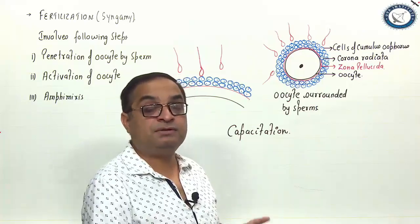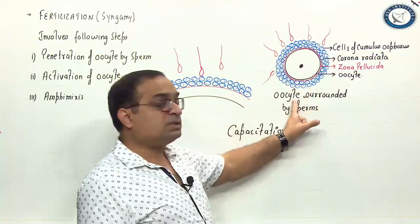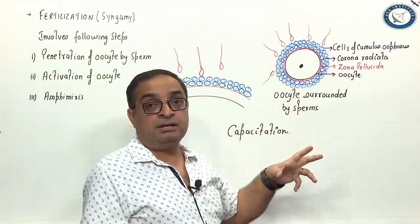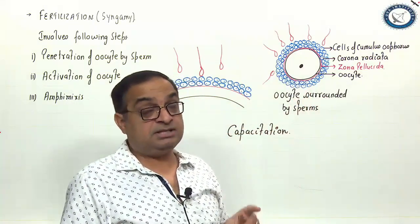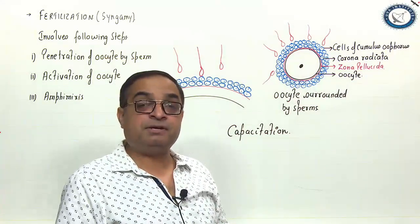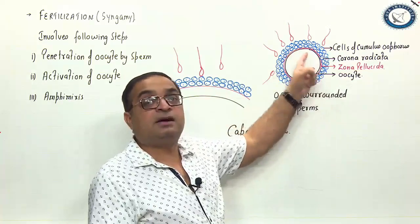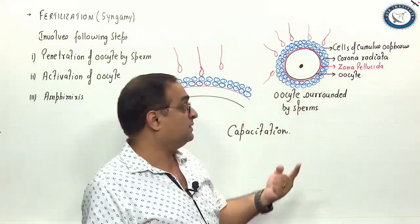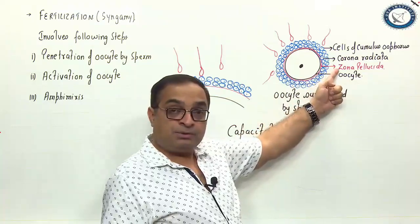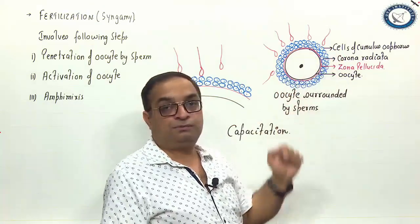As in this diagram, I have shown that the oocyte which is released from the ovary, please remember it is not ovum, it is secondary oocyte. Its meiosis is arrested at metaphase 2 state. This secondary oocyte is surrounded by so many protective layers. As you can see, zona pellucida, corona radiata, and cells of cumulus oophorus.